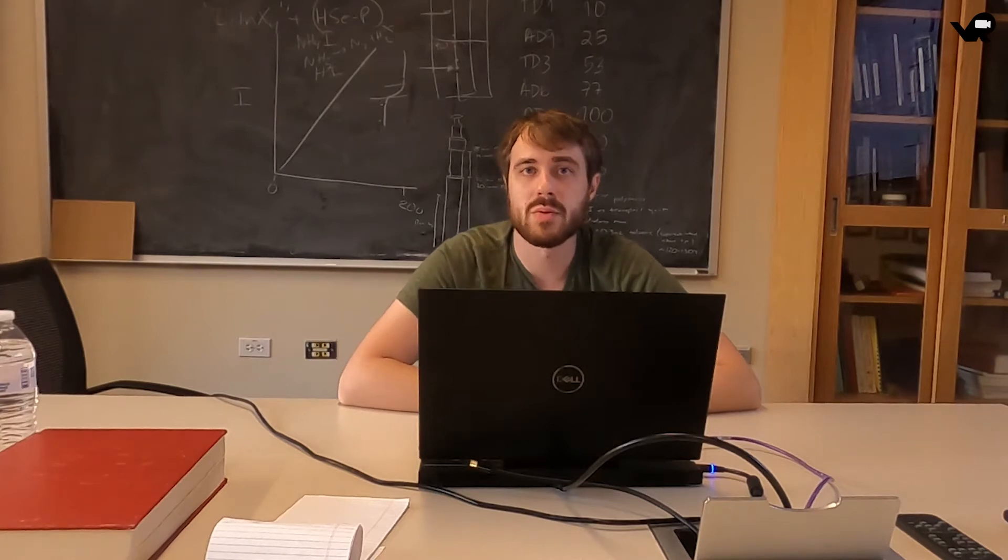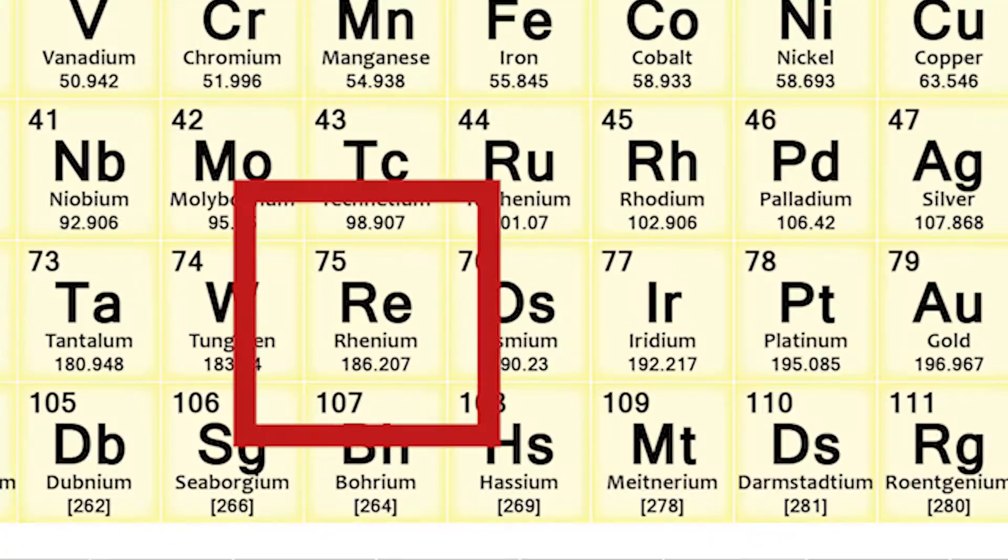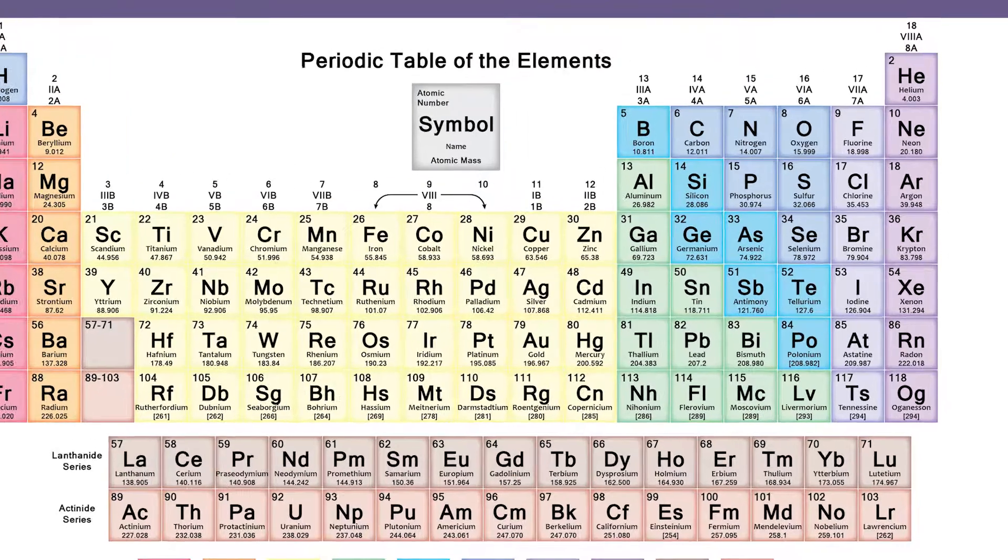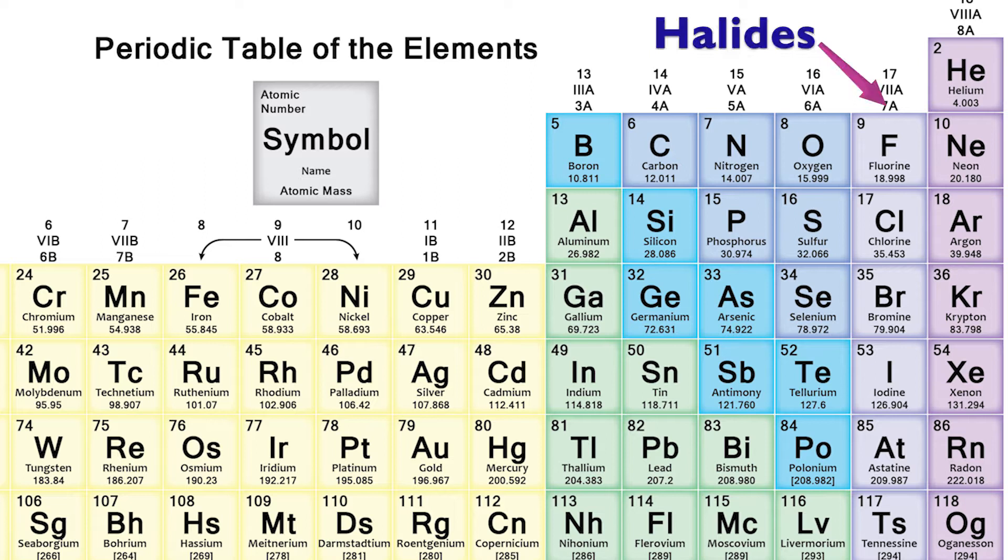The specific class of materials that I've been working on are called rhenium calcohalides. Rhenium is element 75 in the periodic table and calcohalides mean that they contain both a chalcogenide, which is group 16 in the periodic table, and a halide, which is group 17 in the periodic table.